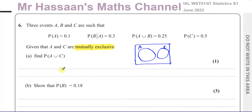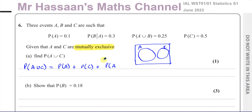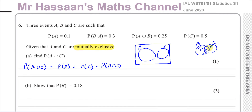For A union C, the formula is: P(A∪C) = P(A) + P(C) − P(A∩C). If there is an intersection, you've counted that overlapping region twice, so you subtract it to get the probability of A or C separately.